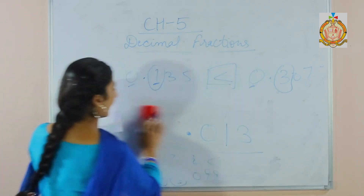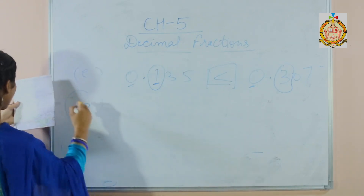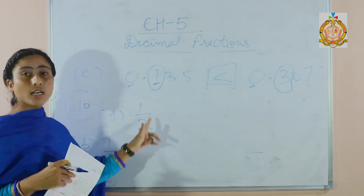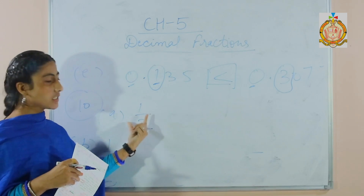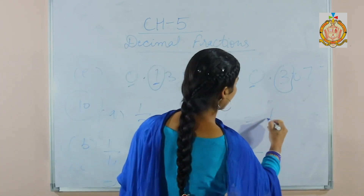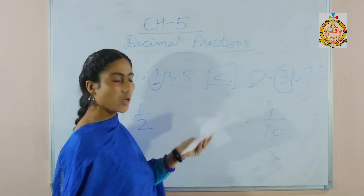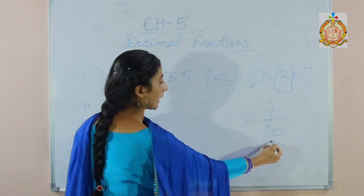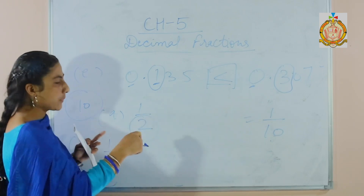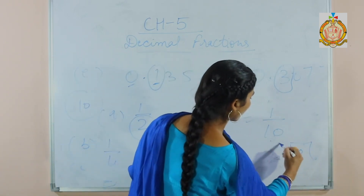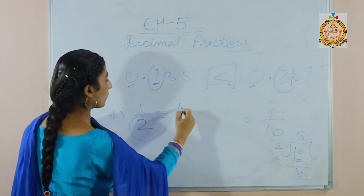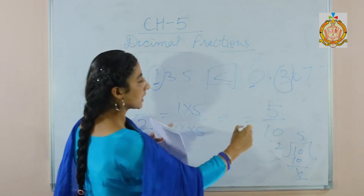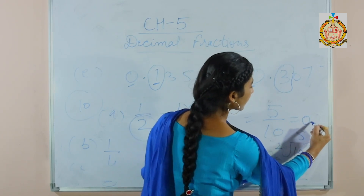Now part 10: convert the common fractions into decimal fractions. Part A is 1 by 2, part B is 1 by 10. To convert a common fraction into a decimal fraction, we change the denominator to 10 or a multiple of 10 — meaning 10, 100, 1000. Here for 1/2, convert to a fraction with denominator 10 because 10 appears in the 2 times table. Divide 10 by 2 to get 5, then multiply numerator and denominator by 5. You get 5 over 10, which becomes 0.5.